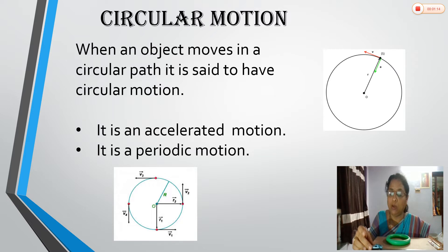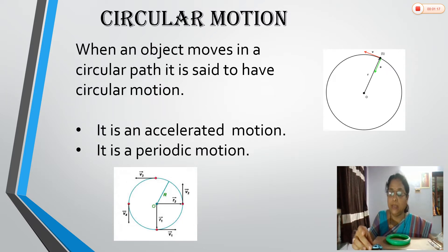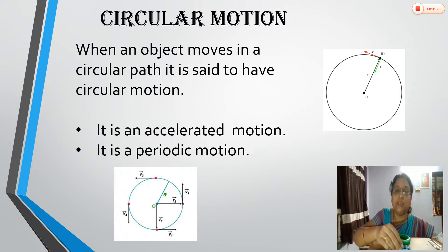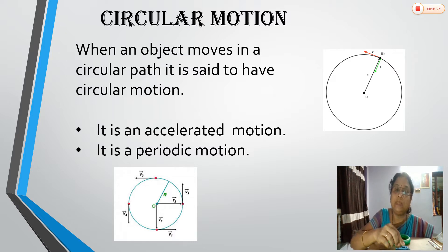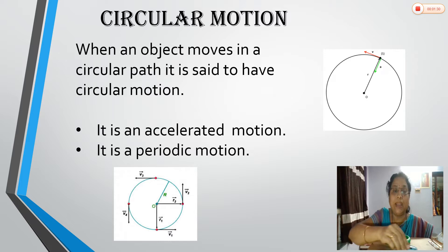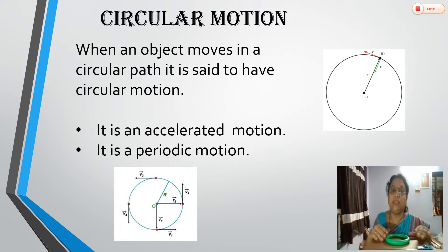First, let us see what linear or translatory motion is. Here, this car is moving on a path shown by the scale — that is linear motion. There is linear displacement, and from that there is linear velocity, which is the rate of change of linear displacement, and also linear acceleration related to translatory motion.